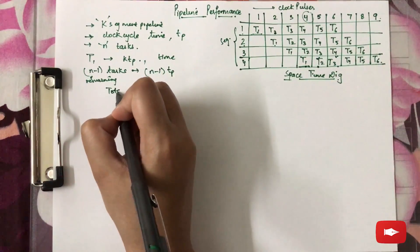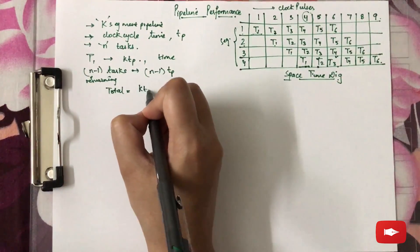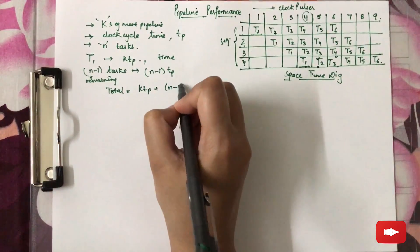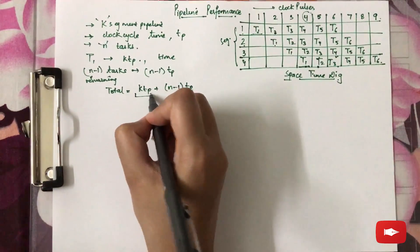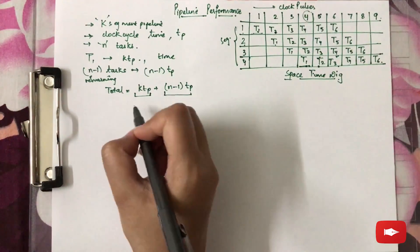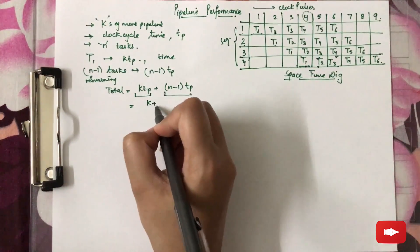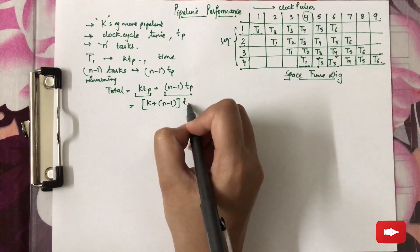So the total time will be KTP plus (N-1)TP. This is for the first task, and this is for the remaining tasks, which will be (K+N-1)TP.